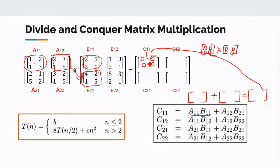The sum fills the C11 portion of the result matrix. Similarly, C12 is computed as A11×B12 + A12×B22, and C21 and C22 are computed using the same strategy.